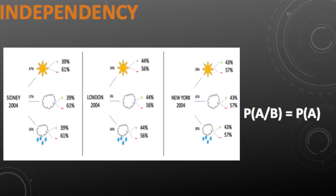We found that this probability is equal to the probability that it's negative or positive, which means that the two variables are independent, because P(A given B) is equal to P(A).